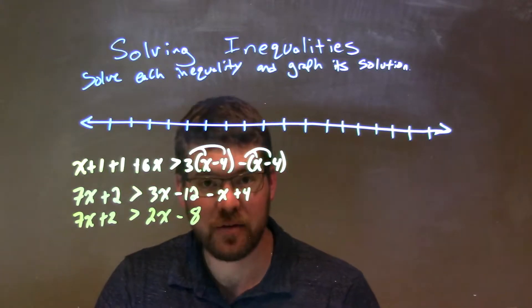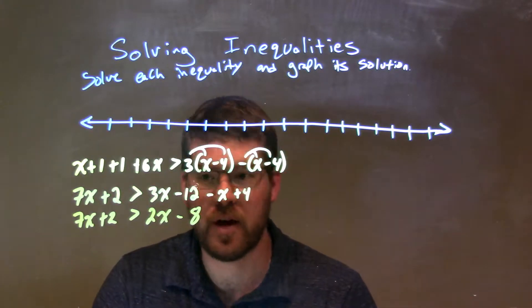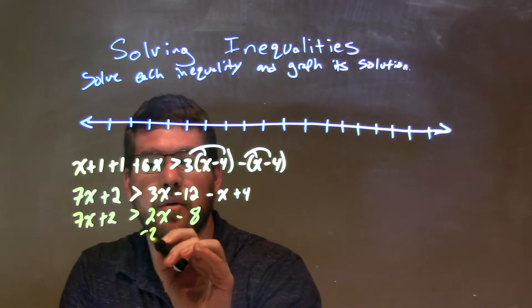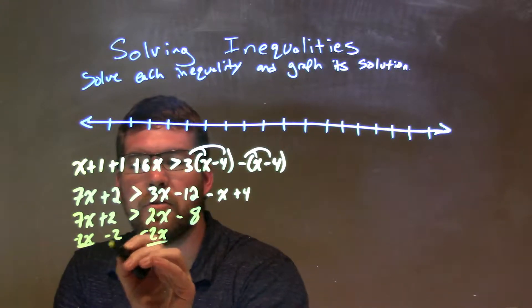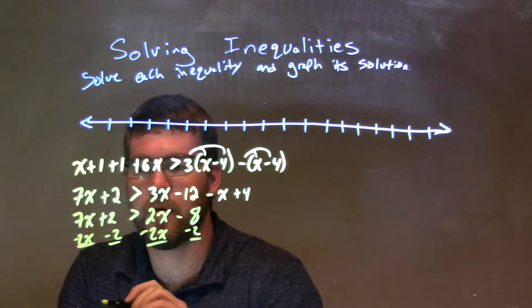Now what I want to do is get my x's together and my numbers together. So, I'm going to subtract 2x to both sides, to the left, and subtract 2 to both sides, the numbers to the right.